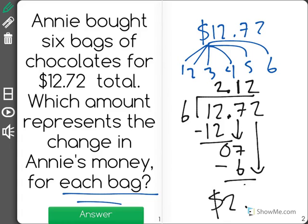But now since we're talking about representing the change in money, we know that Annie spent $2.12. So that means that she has $2.12 less for each bag. So the amount of money is represented as minus $2.12.